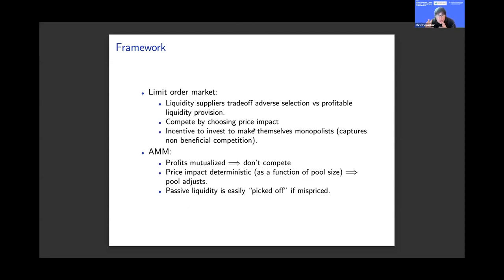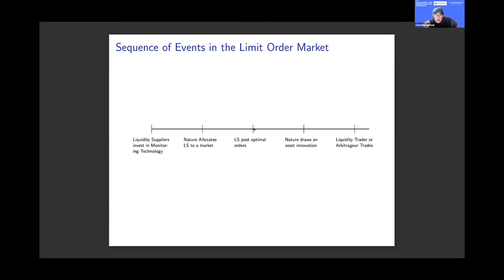In a limit order market, liquidity suppliers think about how to supply liquidity, trading off adverse selection against profitable liquidity provision. They want to trade against the uninformed liquidity trader and avoid trading against the informed trader. They compete by choosing their price impact function. By contrast, in the automated market maker, profits are mutualized so there's no incentive to compete on price — the only choice is the quantity supplied to the pool.